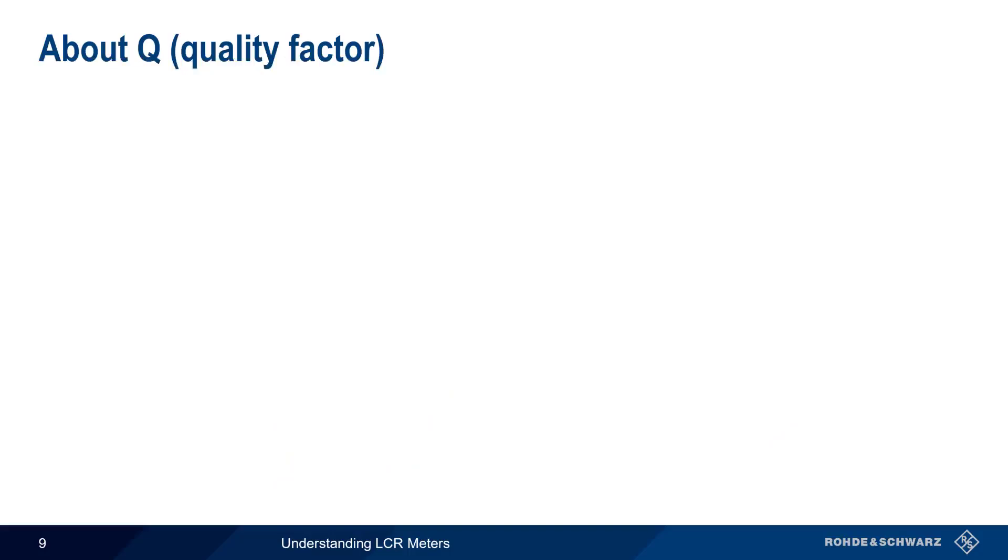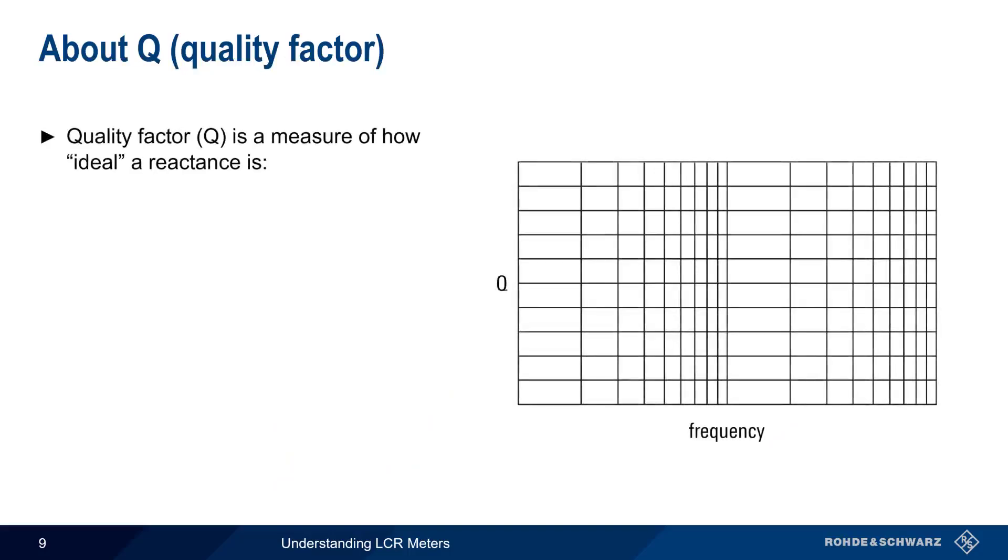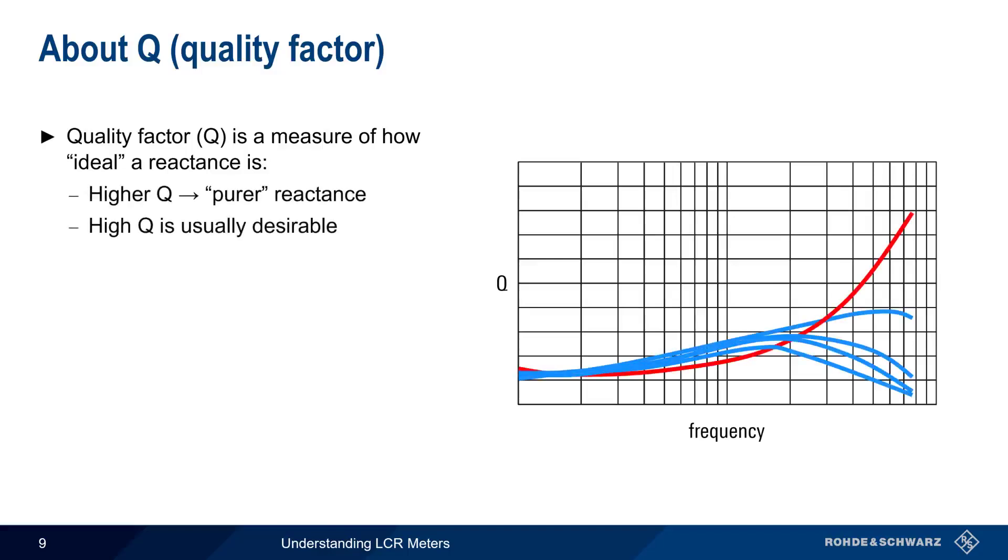The quality factor, or Q, of a reactive component is another way of expressing how ideal a reactance is. Higher values of Q mean a more pure reactance, which is desirable in almost all cases. Q can be calculated in two ways, either as the reactance X over the resistance R, or by taking the tangent of the phase angle theta. Typical values of Q are in the range of tens to low thousands, but as can be seen in the diagram, Q can also vary strongly with frequency.